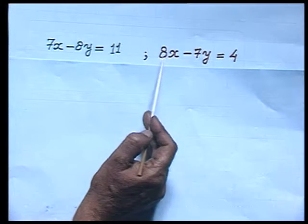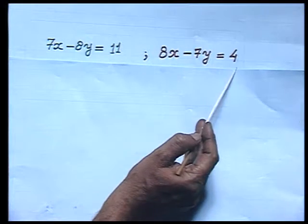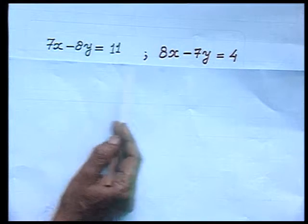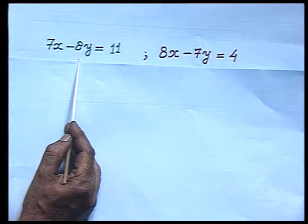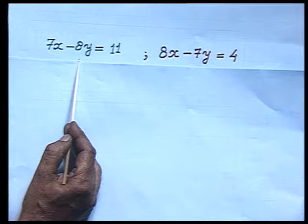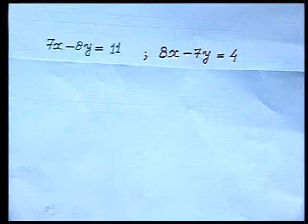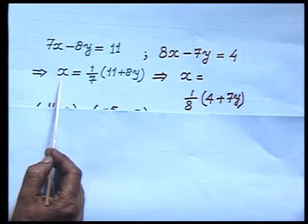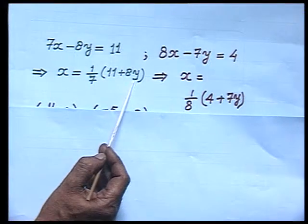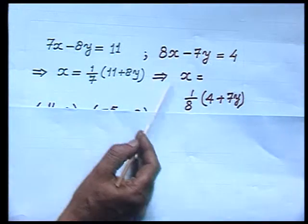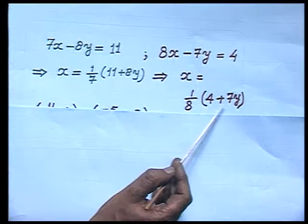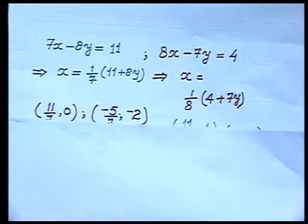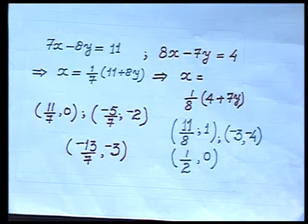Here the system with me is 7x minus 8y equals 11 and the other equation is 8x minus 7y equals 4. To get the ordered pair for both these equations, we make these equations into x as a subject or y as a subject. And here in both the equations, I have made x as a subject. By assigning different values to y, we get the values of x.